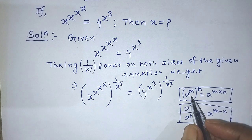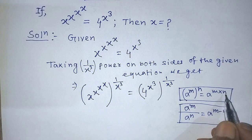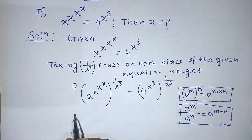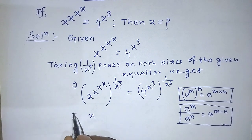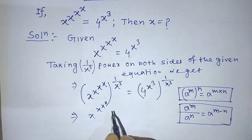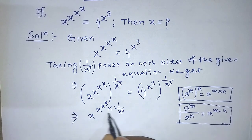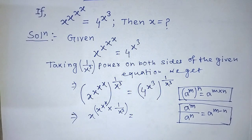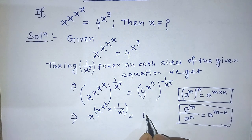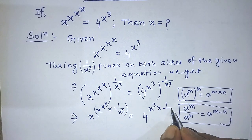According to the formula a to the power m, whole to the power n, is equal to a to the power m into n. Now we can write x raised to the power of x to the power of x to the power of x into 1 over x to the power 3, is equal to 4 raised to the power of x to the power 3 into 1 over x to the power 3.